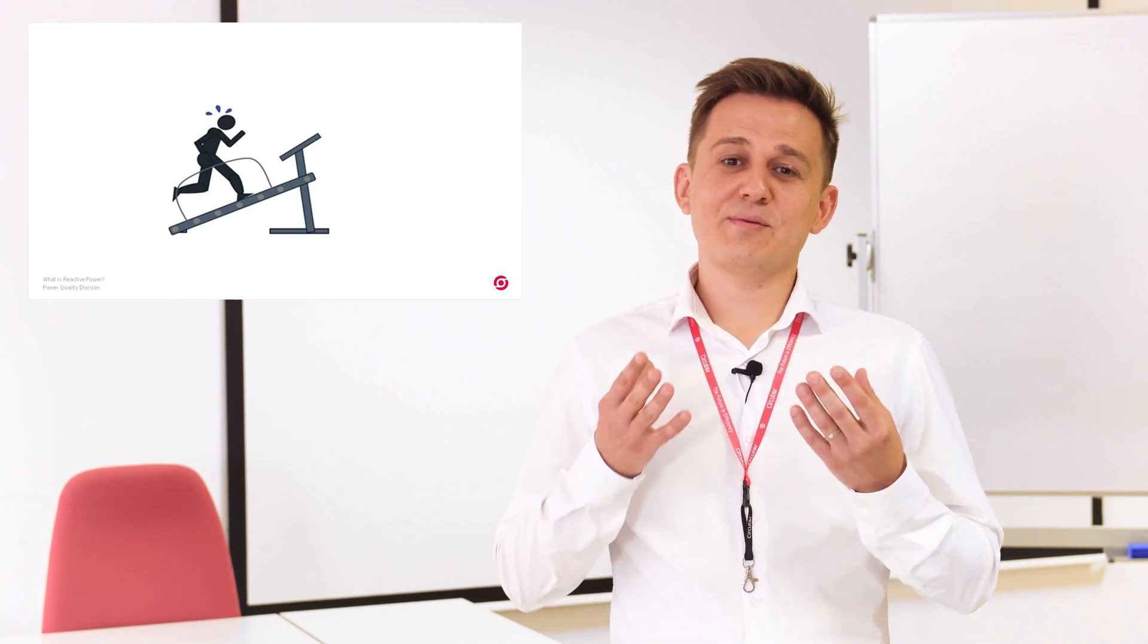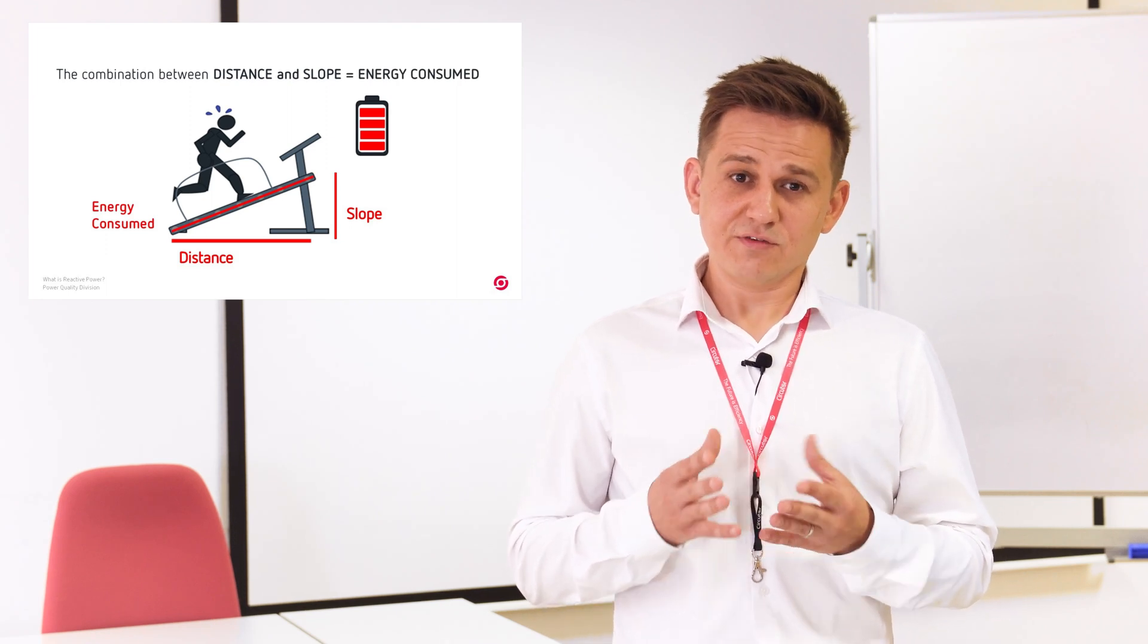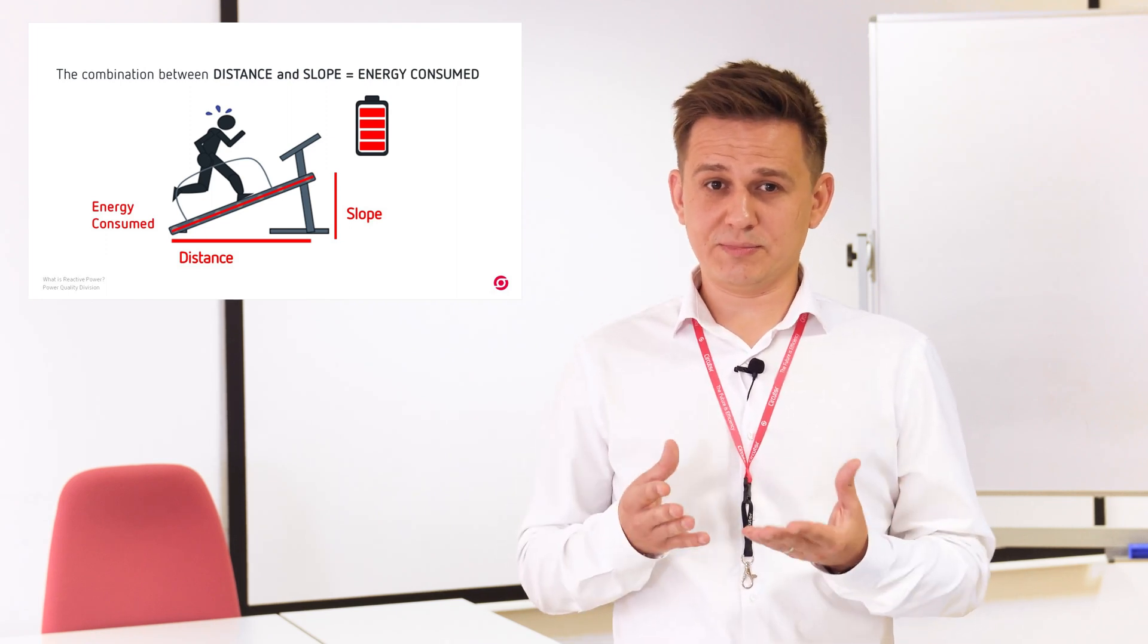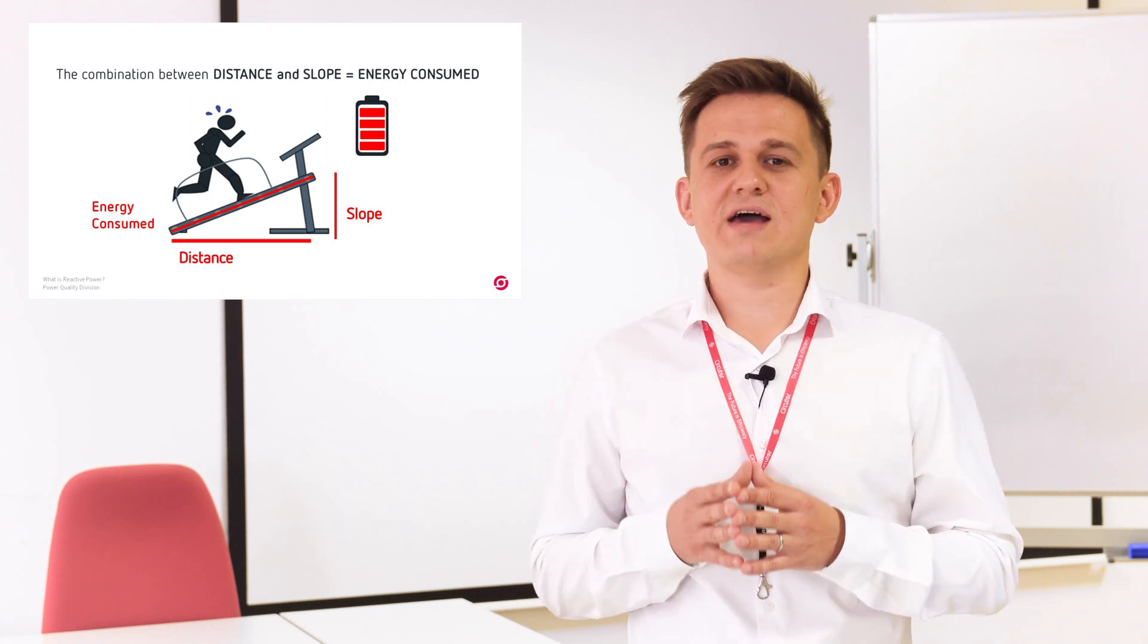The combination between the distance and the slope will be the consumed energy. Therefore, the steeper the slope on the treadmill, the more energy will be required to cover those five kilometers.